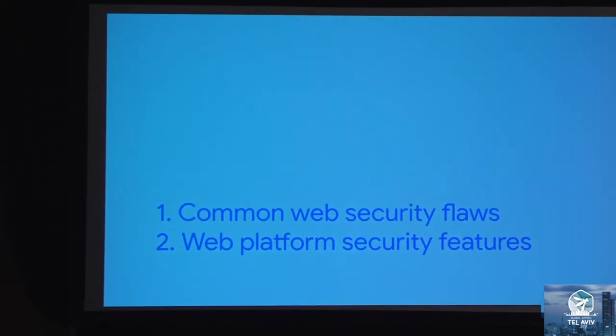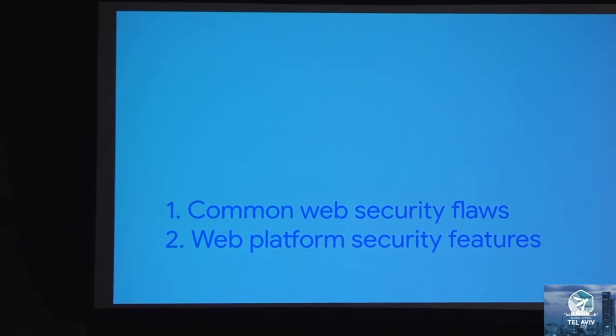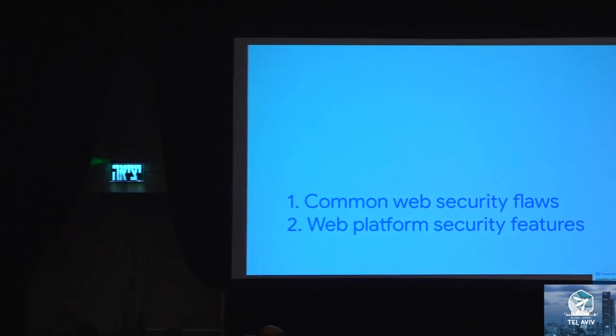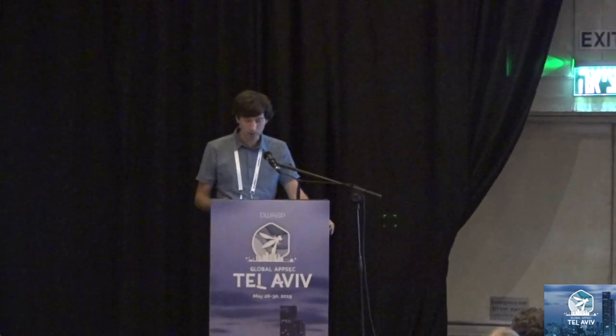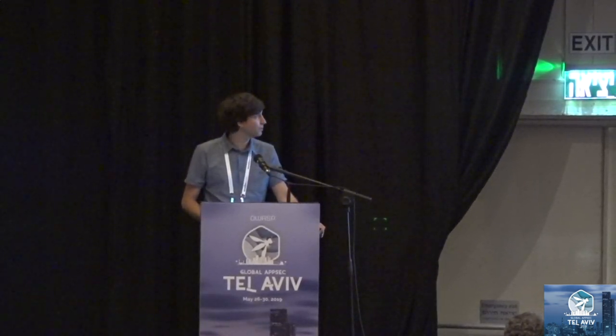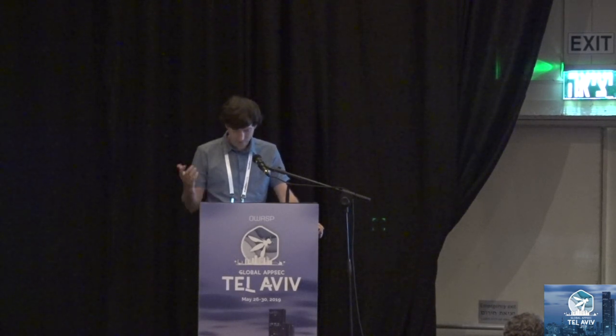Today I will split the talk into two sections. First, a very quick run-through of common web security flaws — not explaining what they are, but looking at VRP data to see which ones are common, categorize them, and map them to web platform security features. In the second part, we'll talk about these web platform security features. Some of them are super new — you may not have heard about them yet — and it would be great to start a discussion about them later as well.